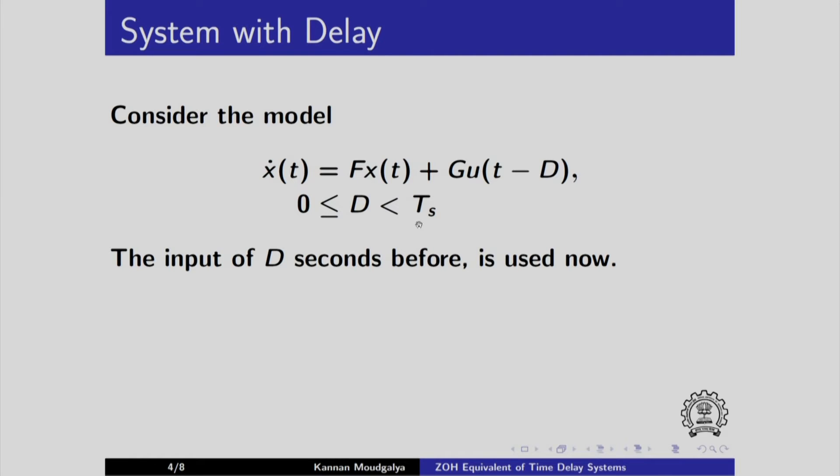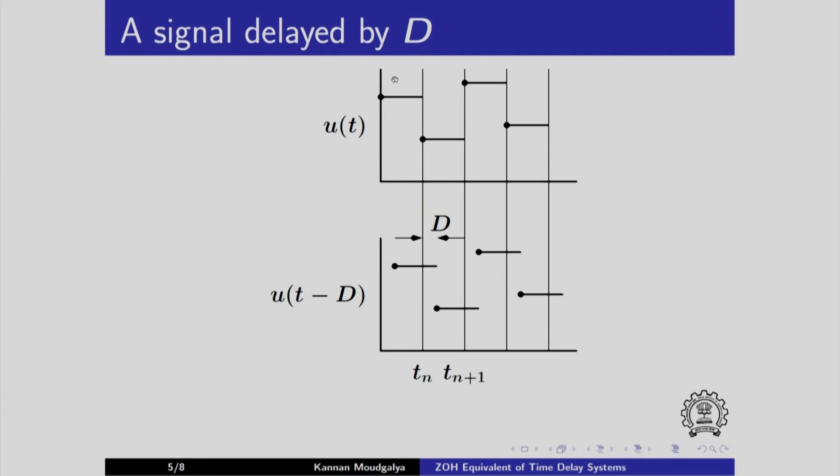Recall that Ts is the sampling period. We would like to arrive at the standard form. Here is our u in the zero order hold equivalent form. Recall that we use the value obtained at the beginning of the interval throughout the interval.